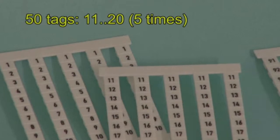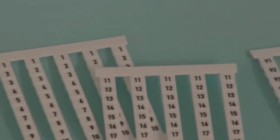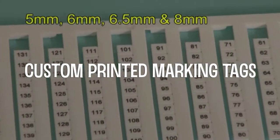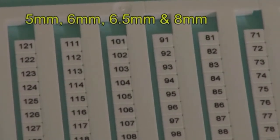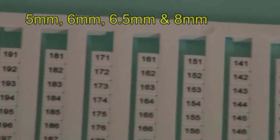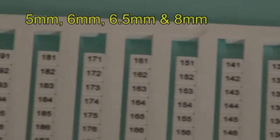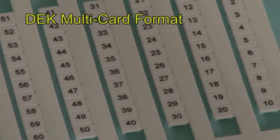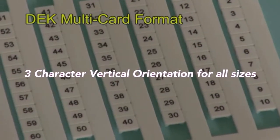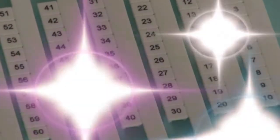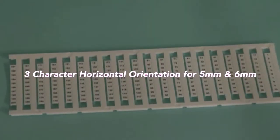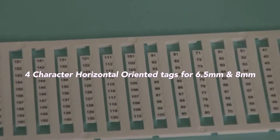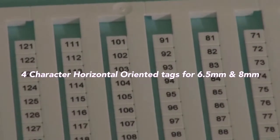If standard sequential numbering does not meet your project requirements, SCS can supply custom printed marking tags. Custom printing is offered on 5mm, 6mm, 6.5mm, and 8mm DEK tags in the multi-card format. This format allows the printing of 3 characters in vertical orientation for all sizes, 3 characters in horizontal orientation for 5mm and 6mm sizes, and 4 characters in horizontal orientation for the 6.5 and 8mm sizes.